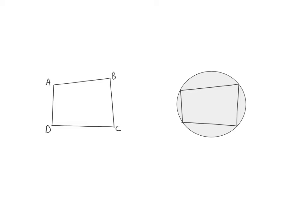The first definition is opposite angles. In this quadrilateral, A and C are opposite angles — they do not have a side in common. If we compare that to angle A and angle D, they are adjacent angles because they have a side in common. And if we look at D and B, they are also opposite angles.